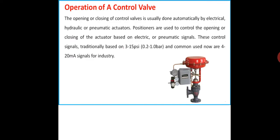The opening or closing of a control valve is done automatically by electric, hydraulic, or pneumatic actuators. The final control element is a mechanical system, and the shifting or displacement of this mechanical system is done with the help of electrical, hydraulic, or pneumatic signals. These actuators are responsible for the displacement, and positioners are used to control the opening or closing of actuators based on electric or pneumatic signals.